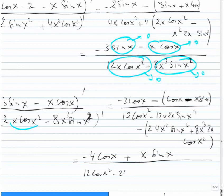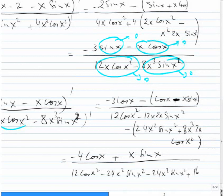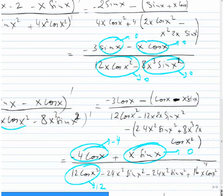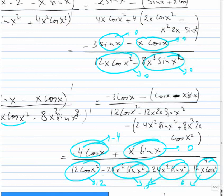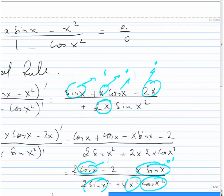Putting everything together: the numerator is minus 3·cos(x) minus cos(x) plus x·sin(x), which simplifies to minus 4·cos(x) plus x·sin(x). The denominator is 12·cos(x²) minus 24x²·sin(x²) minus 24x²·sin(x²) plus 16x⁴·cos(x²). Now evaluating at x→0: the numerator goes to minus 4, and the denominator goes to 12. So the limit equals minus 4 over 12, which simplifies to minus 1 over 3.